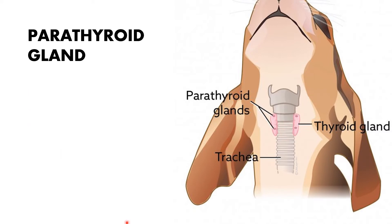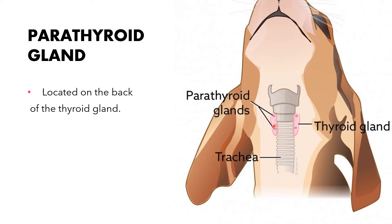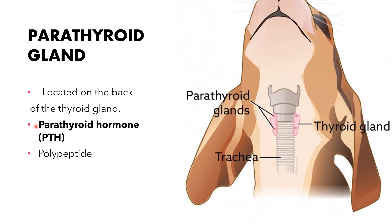The next endocrine gland is the parathyroid gland, located on the back of the thyroid gland. It is responsible for the production of parathyroid hormone (PTH), which is classified as a polypeptide hormone.